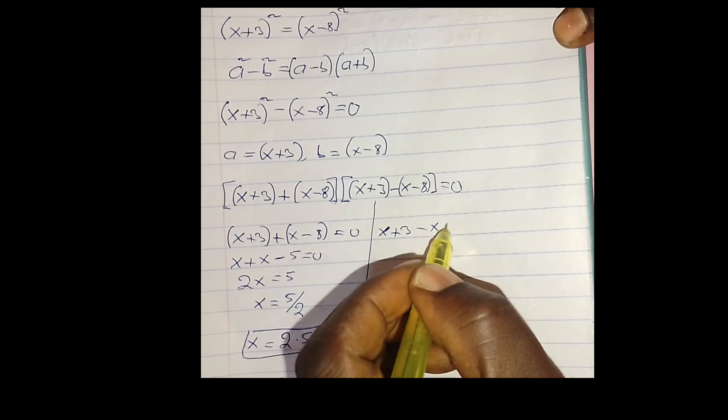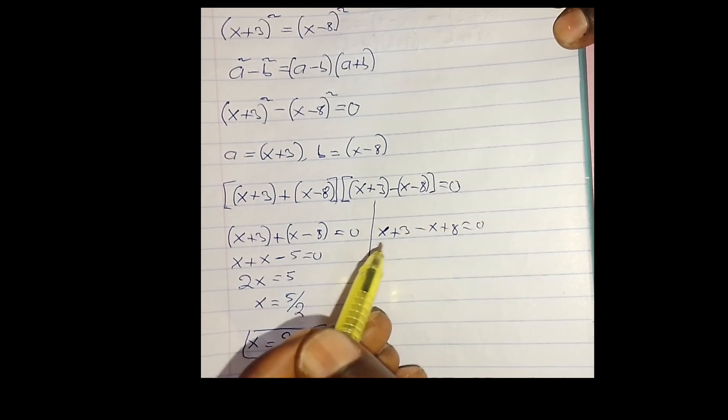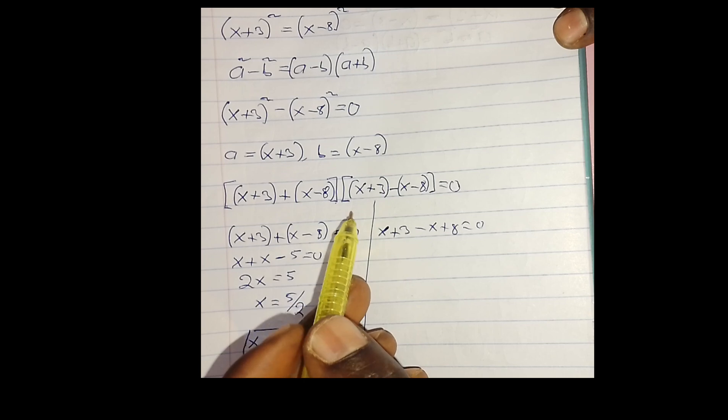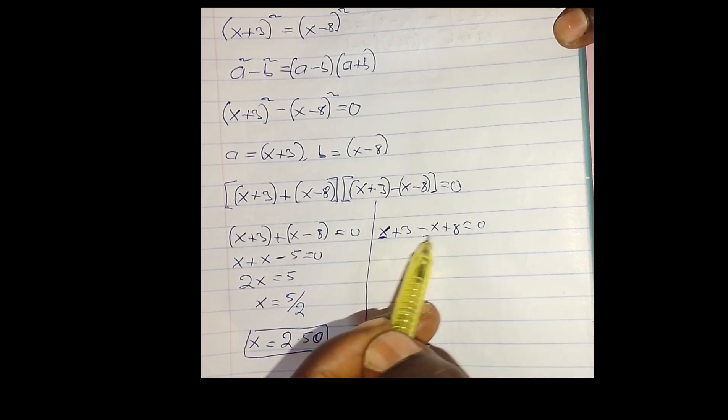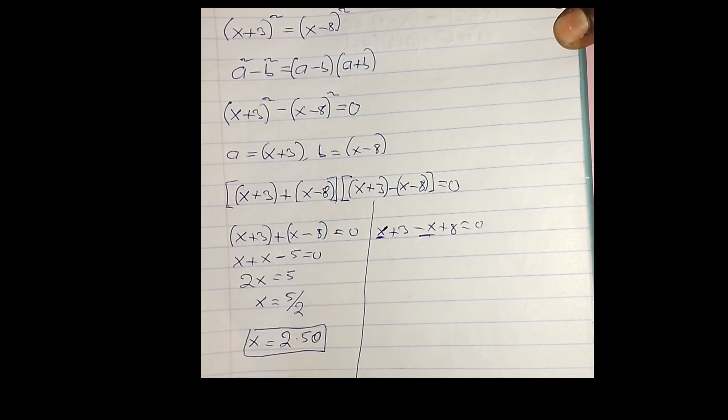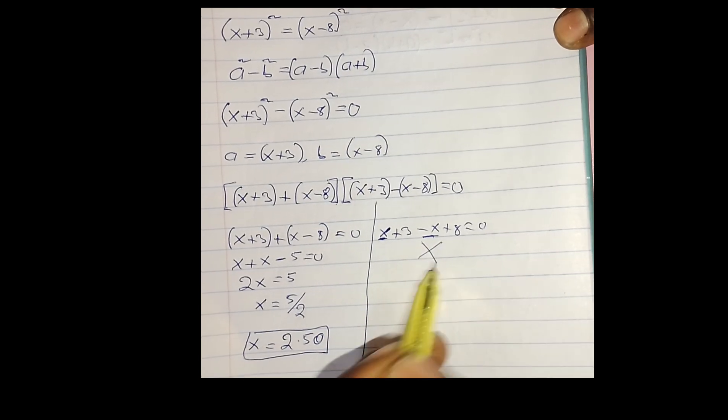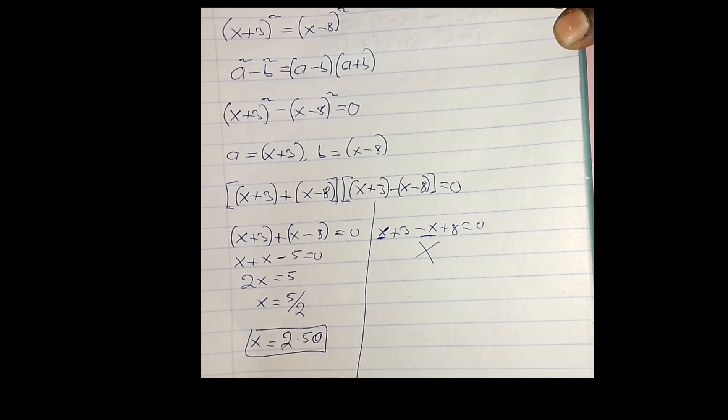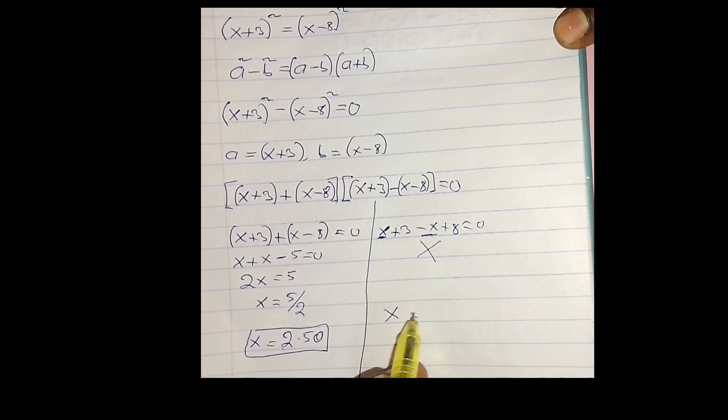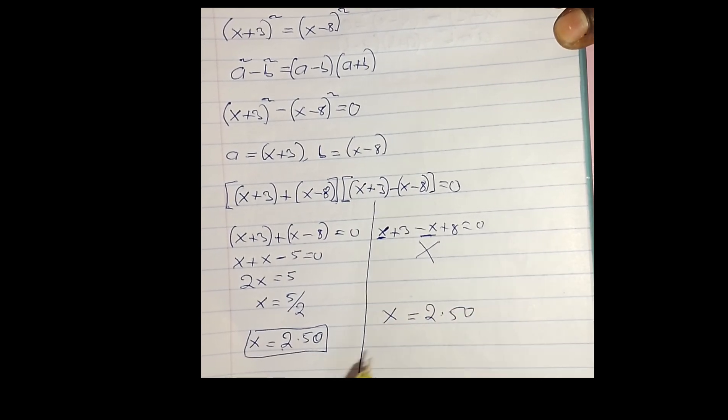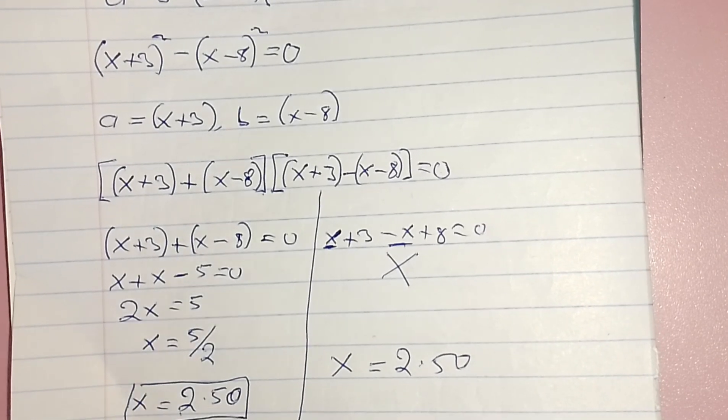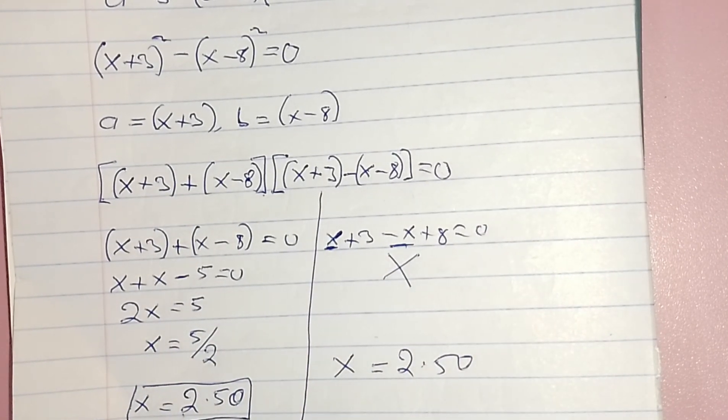So automatically there is no solution to this because x - x is automatically 0. So this implies that we are going to reject this and take the first solution. Therefore x equals 2.50. Thank you so much for watching. If you learned something new, don't hesitate to subscribe because you will never want to miss all my content for any reason. Bye!